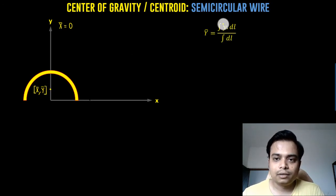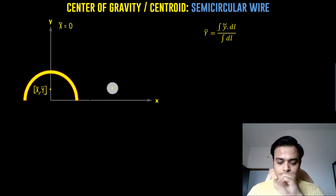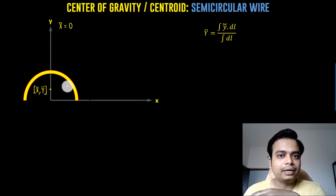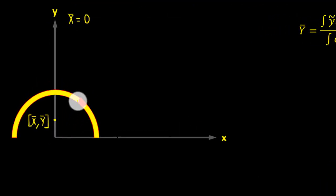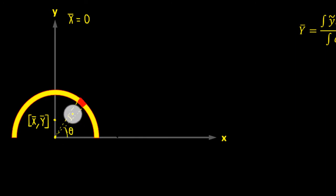Now for calculating ȳ — let me explain what this ȳ (y-noodle) is. Since this is a linear, one-dimensional object, we have to take a one-dimensional element. Here is that one-dimensional element, subtending some angle. Let's say the angle is theta, so the angle subtended by the small element at the center of the semicircular wire is represented by theta.